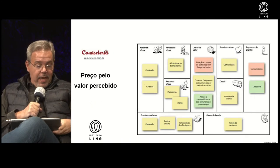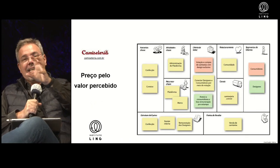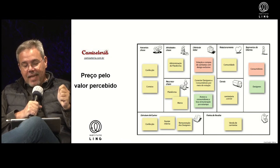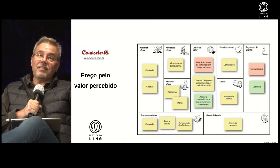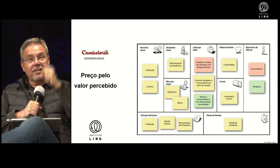O próximo exemplo é a Camiseteria, que tem como proposta o valor percebido. Por votação e compra de camisetas com design exclusivo, um designer faz uma estampa, oferece por um determinado valor e as pessoas vão dando cotas. Os segmentos de clientes são tanto designers — pois a plataforma oferece um canal de venda para o designer — como os consumidores desses designers.